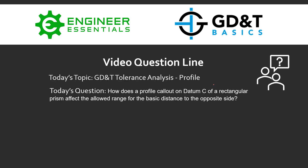Hey everybody, Jason here again with GD&T Basics and the video question line. Today's topic is GD&T tolerance analysis with an emphasis on the profile callout. Today's question that was submitted is: how does a profile callout on datum C of a rectangular prism affect the allowed range for the basic distance to the opposite side?